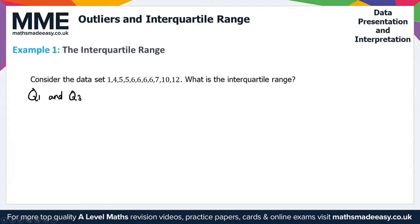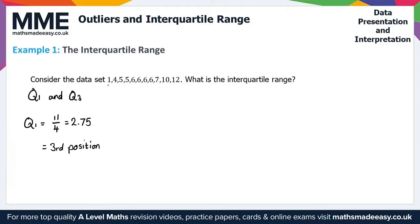To work out Q1, we take n, the number of data points, which is 11 in this example. For Q1, we do 11 divided by 4, which gives us 2.75. We always round this up — it tells us the position of Q1 — so that gives us the 3rd position. Counting up from the first position, the third position gives us Q1 = 5.